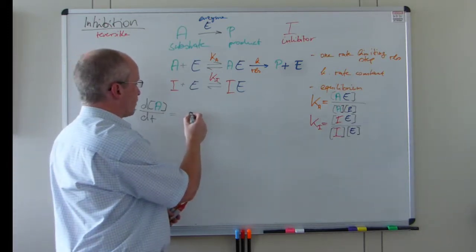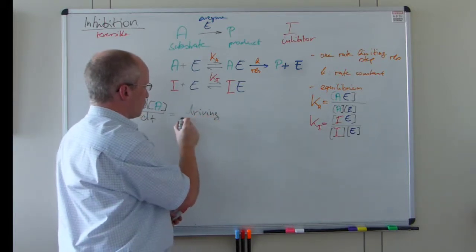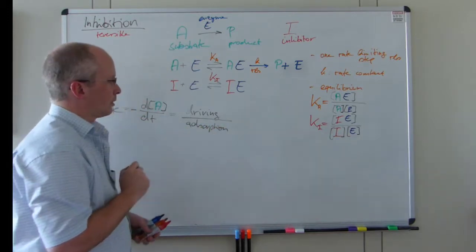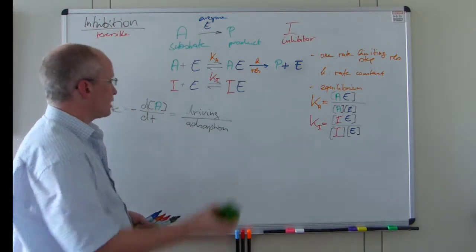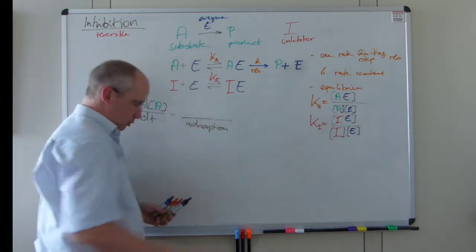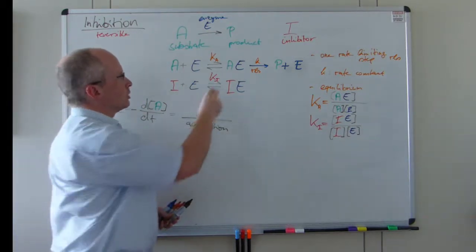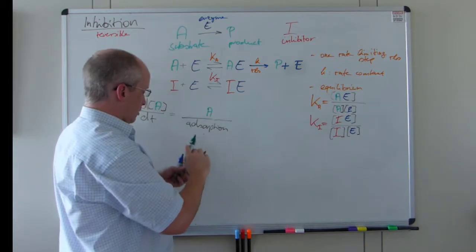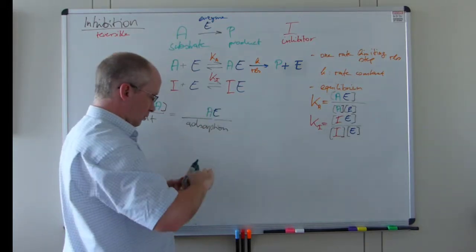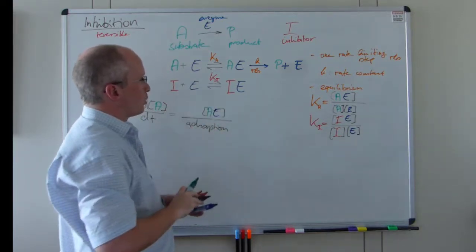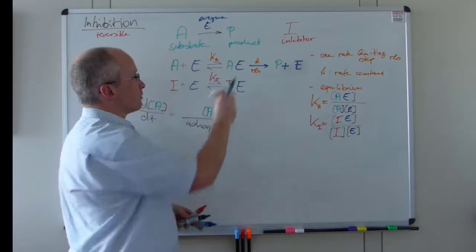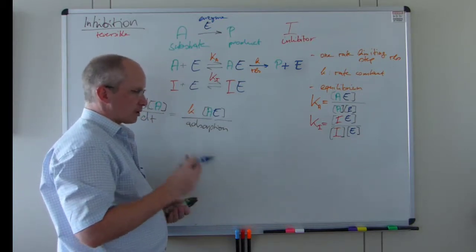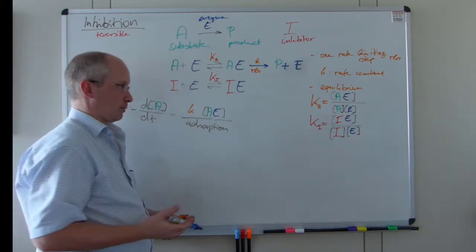More generally we have a driving numerator and an absorption denominator — these two ingredients we need. The likelihood of the reaction taking place is proportional to the concentration of AE, which is the driving concentration. The likelihood for that to react is given by k, and the overall likelihood of this happening is governed by the absolute amount of enzyme in the system, which is E0 — the total or initial enzyme concentration.